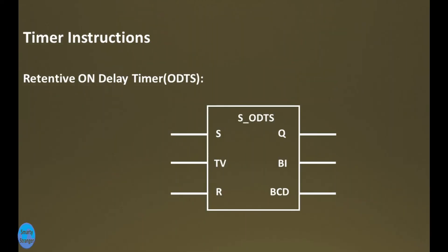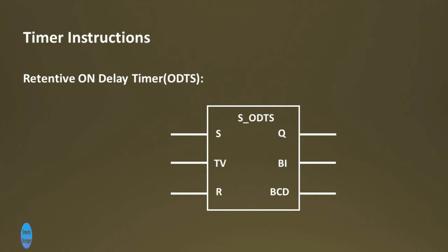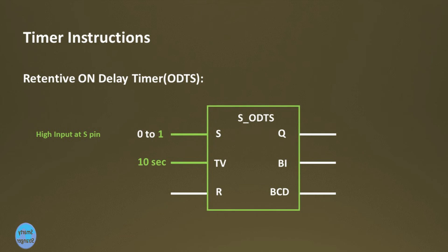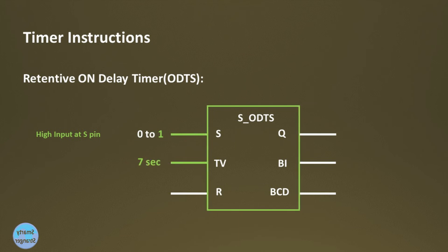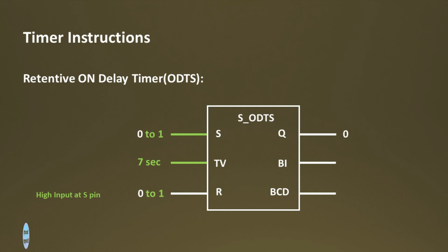If you want a timer which completes its timing, then the Retentive On Delay timer is best suited for you. The Retentive On Delay timer starts the specified timing if there is a positive edge at the S pin. The timer completes its timing and the output will be high. The timer will be re-triggered with the specified time if there is a fluctuation in signal state at S input. The timer is reset only if the reset R input changes from 0 to 1.